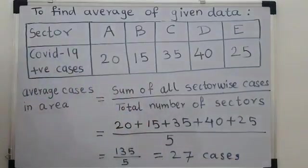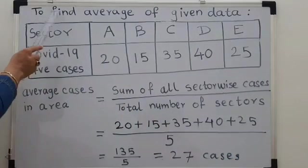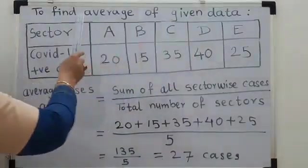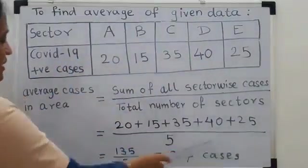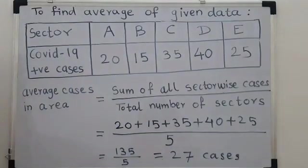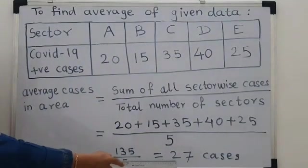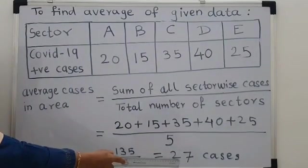So, this particular area in which these 5 sectors are there, we are getting 27 as the average number of cases. This is the answer of average.